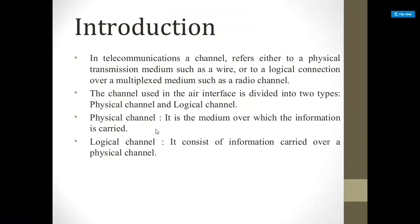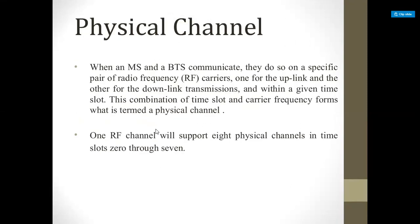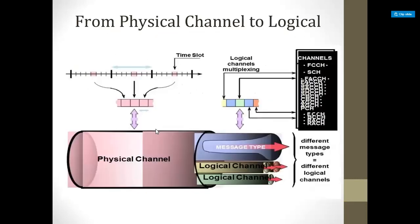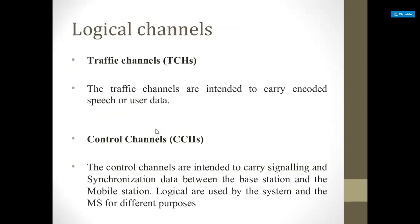This is a diagrammatic representation of how information is transmitted from a physical channel to a logical channel using different channel types. The main categories of GSM channels are two types: the traffic channel and the control channel, represented as TCH and CCH respectively.